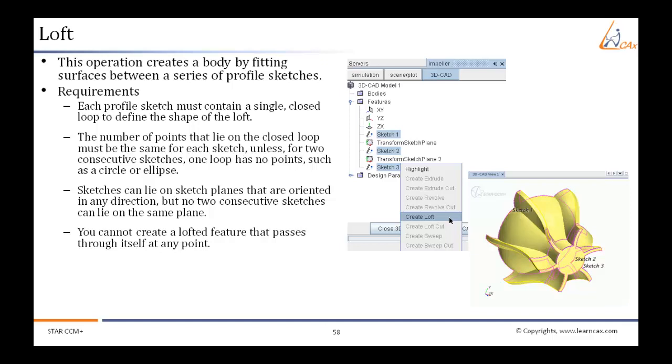Each profile sketch must contain a single closed loop to define the shape of the loft. The number of points that lie on the closed loop must be the same for each sketch, unless, for two consecutive sketches, one loop has no points, such as a circle or ellipse.